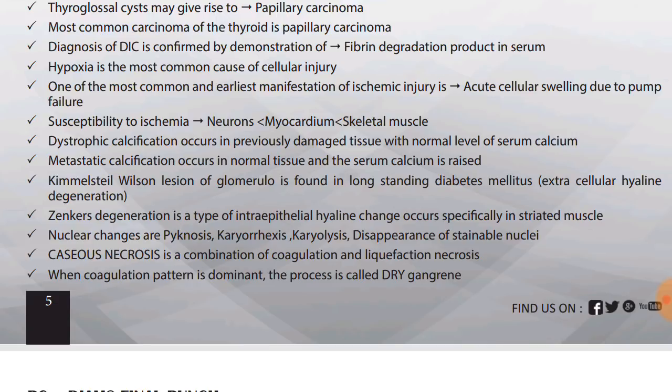Dystrophic calcification occurs in previously damaged tissue with normal levels of calcium — the tissue is damaged but calcium is normal. Metastatic calcification occurs in normal tissue but serum calcium level is raised — calcium is increased. So dystrophic means tissue is damaged; metastatic means calcium is increased. Kimmelstiel-Wilson lesion of glomerulus is found in long-standing diabetes mellitus — it is extracellular hyaline degeneration.